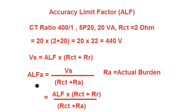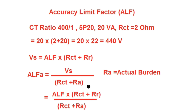Similar to ISF, the accuracy limit factor also varies with the actual CT burden. If RA is the actual burden, then actual ALF = Vs / (RCT + RA) = ALF_rated × (RCT + RR) / (RCT + RA). If the actual CT burden RA is less than the rated burden RR, the actual accuracy limit factor will increase. Conversely, if RA is greater than RR, the accuracy limit factor will decrease.